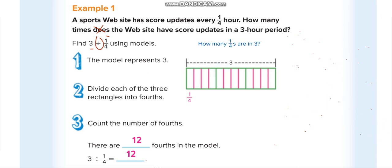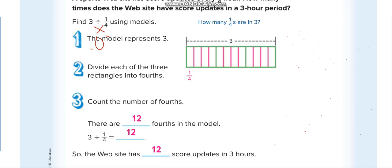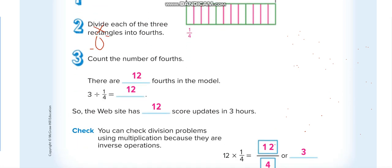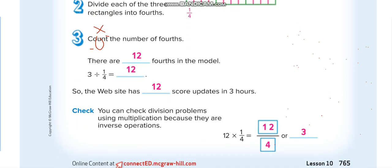Here is the answer: 3 times 4 — dividing a whole number by a unit fraction, just multiply the whole number with the denominator. 3 times 4 equals 12. They also check the answer here. Let us move to the next page.